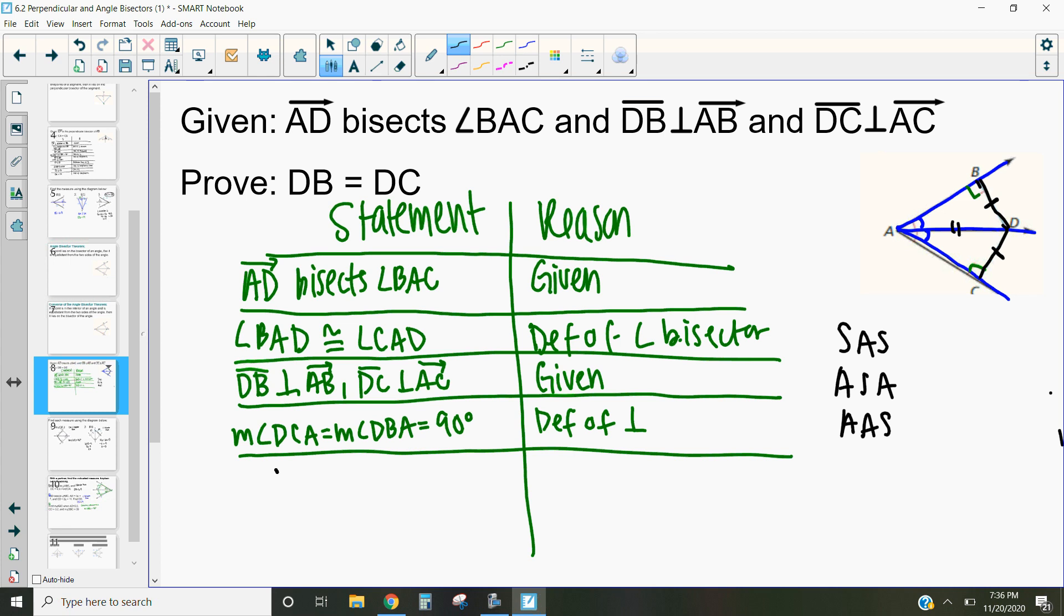And how can we prove that? Well we can show that segment AD is congruent to segment AD by that reflexive property. Reflexive property of congruence. Which basically says something is congruent to itself. Great.